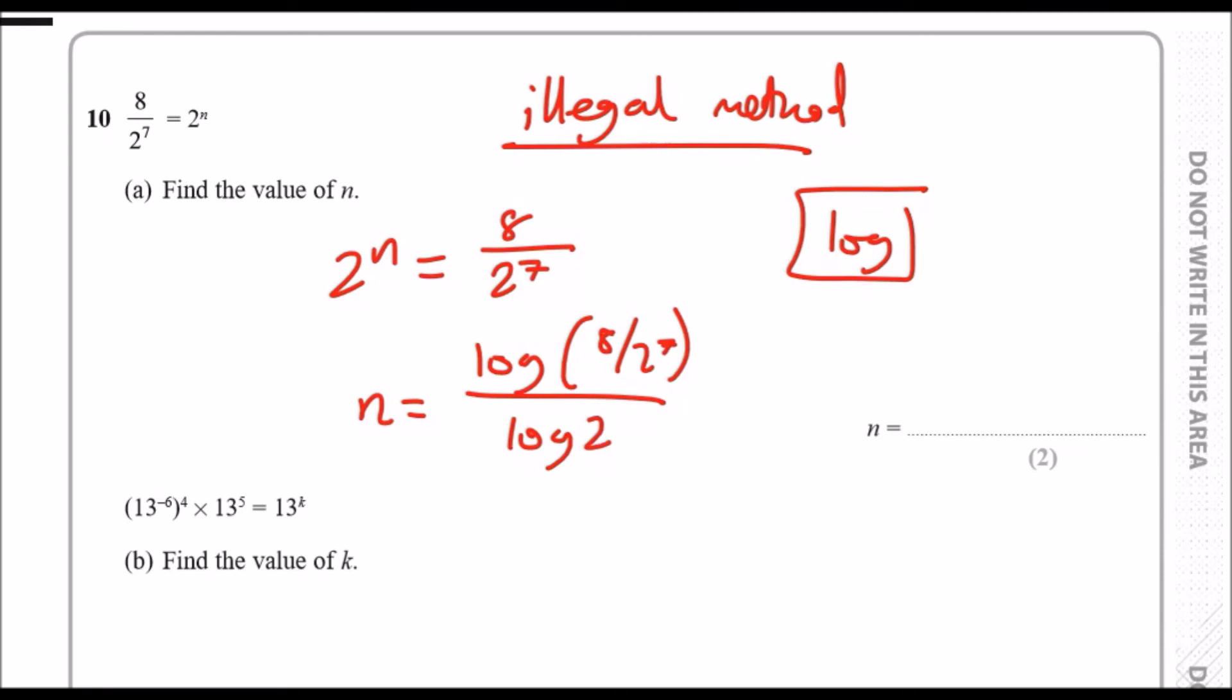Just like a normal algebra question, if this was 2n, you can write n equals the log of everything here over the log of 2. Remember, when you're working in powers, you just stick a log in front and it gives us the answer straight away. So 8 over 2 to the power 7, all over log 2. You should get minus 4, and this is actually the correct answer.